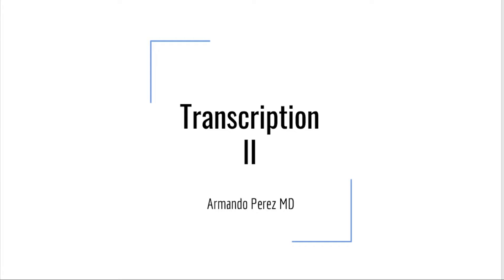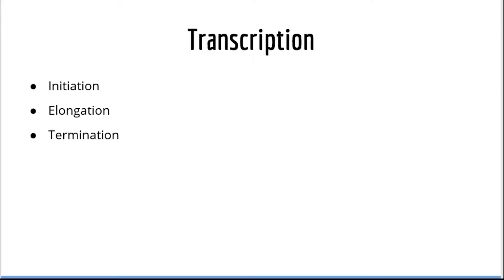Specifically, we will go over initiation, elongation, termination, RNA splicing, addition of a poly-A tail and 5' cap, and lastly we will briefly describe the structure of mature mRNA. So with that said, let's start a discussion with transcription.